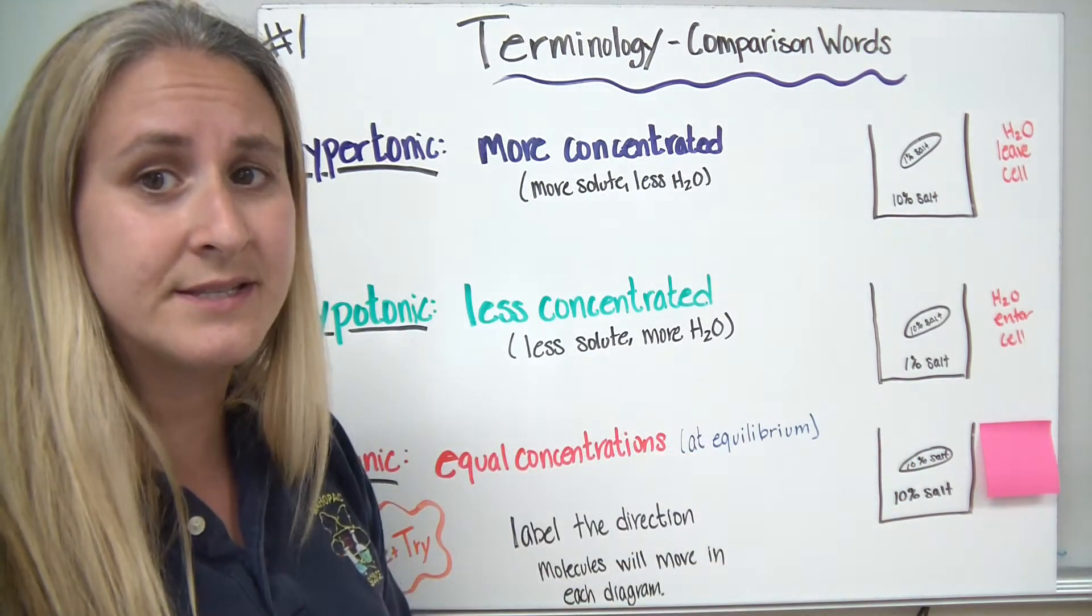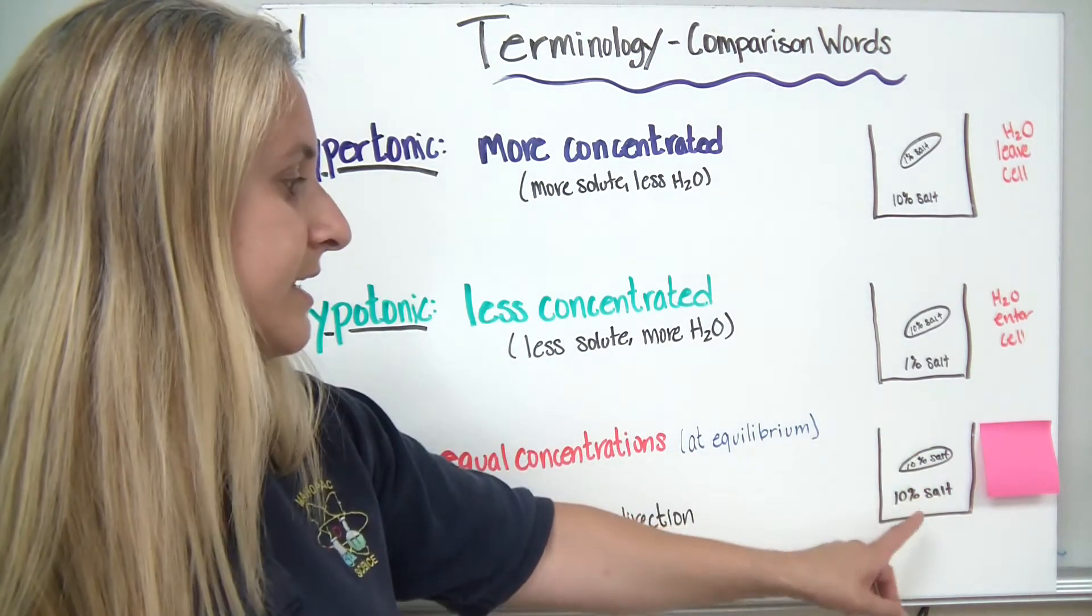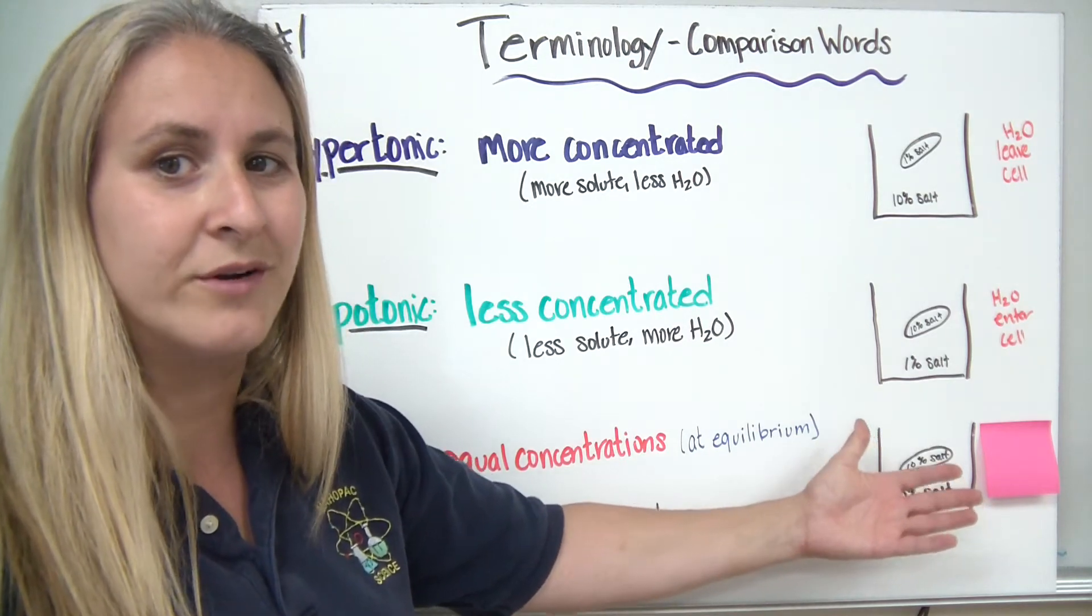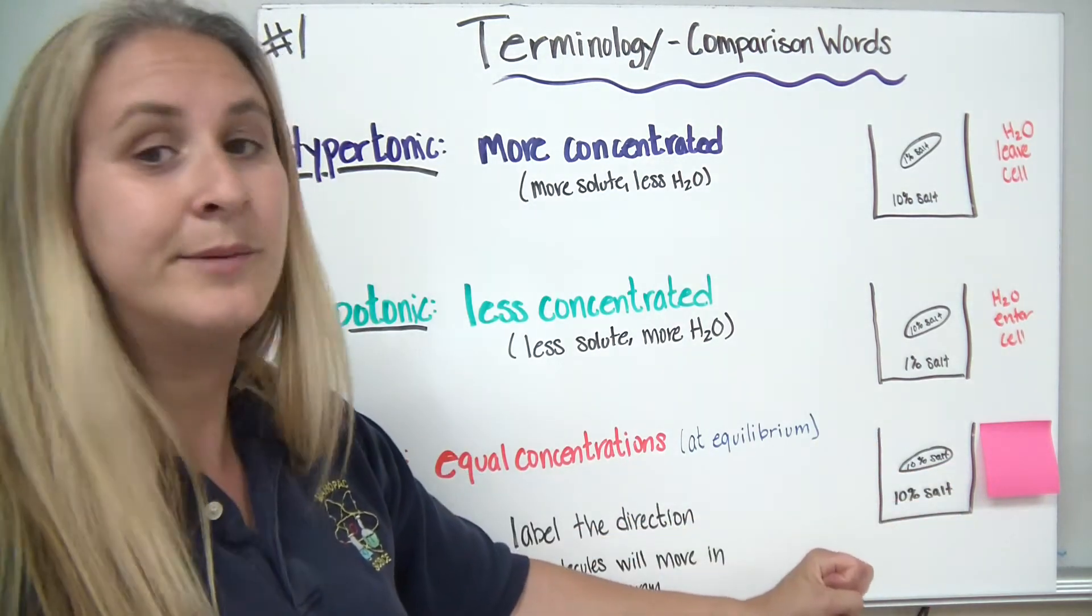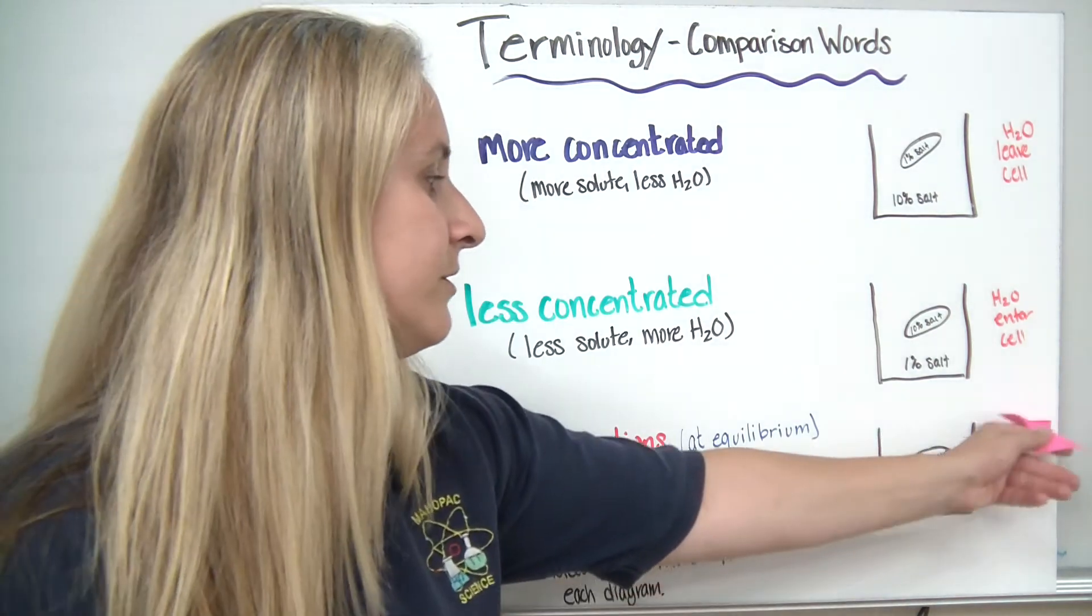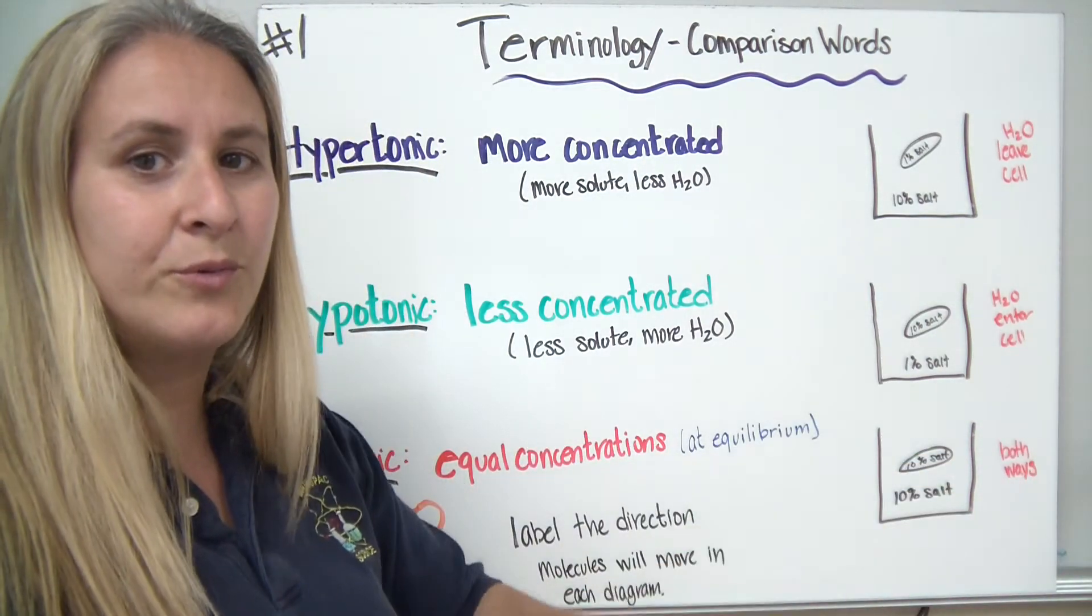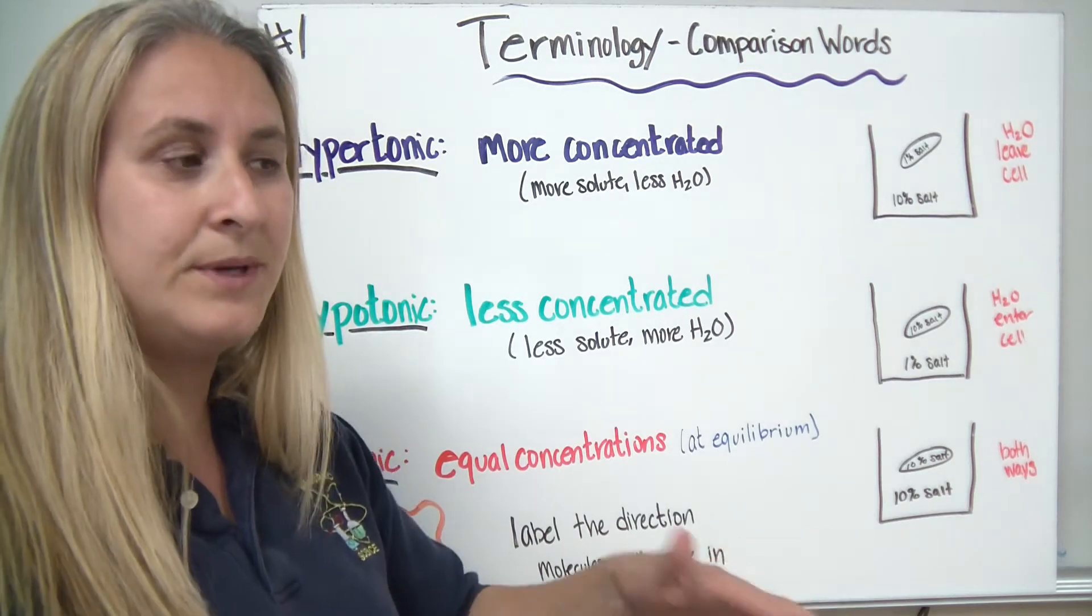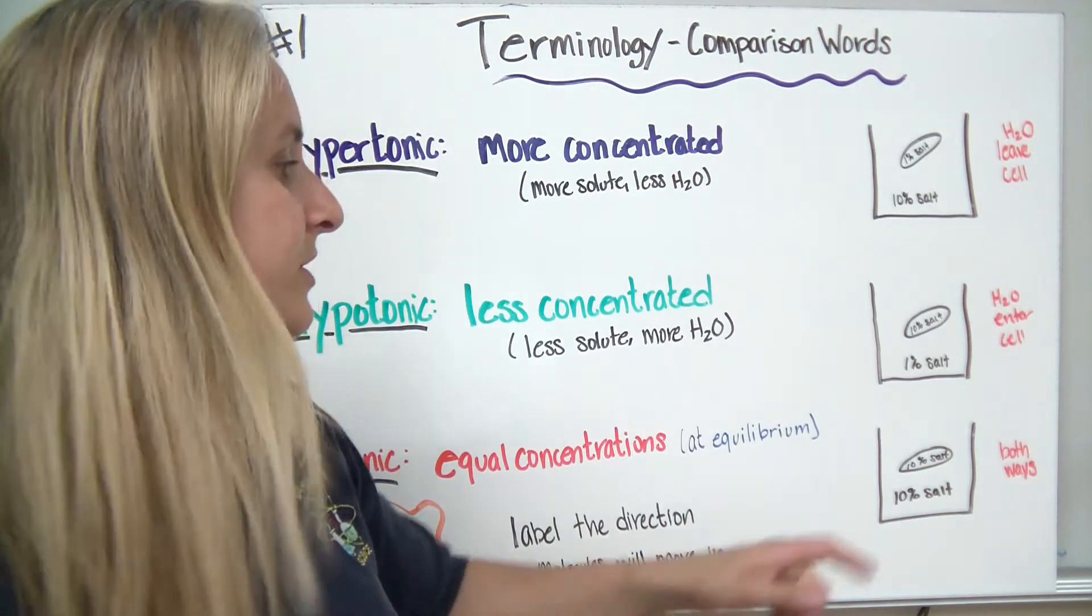The isotonic solution, you can see, has the same percentage of salt inside and outside, which would then mean that it would have the same percentage of water, 90% inside, 90% outside. They're equal. The water's going to move both ways, equal in, equal out, constantly moving, but keeping the concentrations equal to each other.